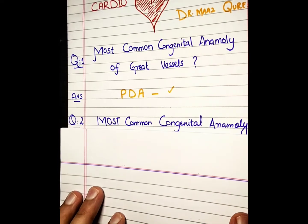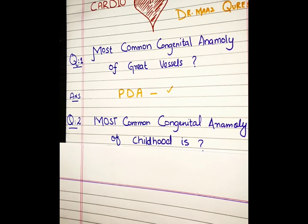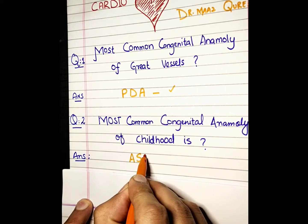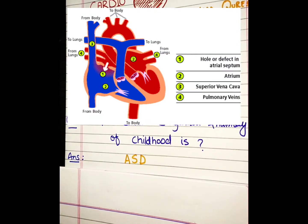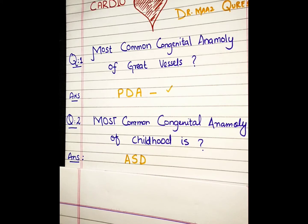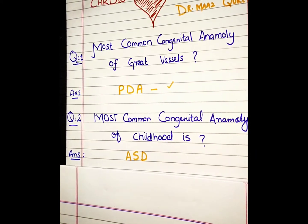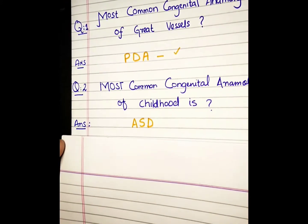Next MCQ: Most common congenital anomaly of childhood. Give it a few seconds to think. The answer is ASD — Atrial Septal Defect. Whenever you get a child who is pale and has congenital anomalies of the heart, look for the differential diagnosis of ASD. That's Atrial Septal Defect.